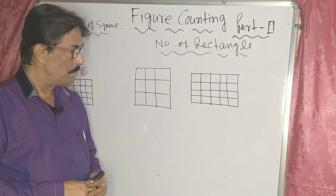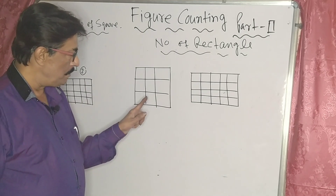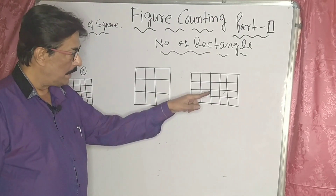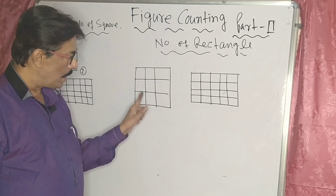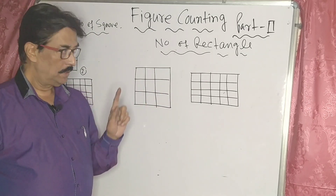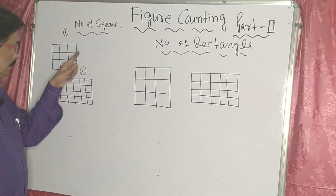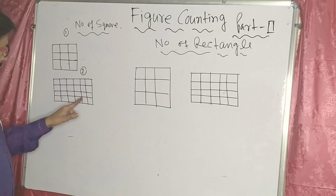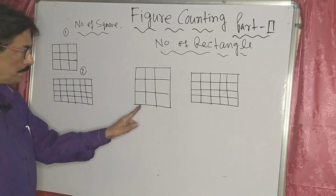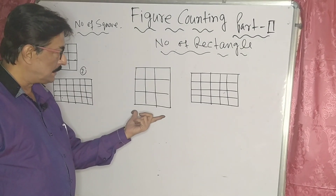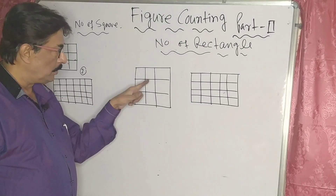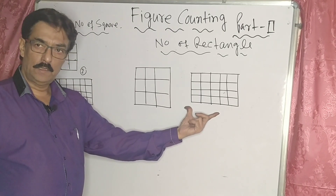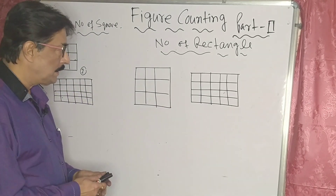Now our next problem. In the previous problem, they gave a square or rectangle figure and you had to find the number of squares inside. Now it is completely different. The figure is a square — you have to find the rectangles. Or the figure is a rectangle — you have to find the rectangles. Remember the rule.